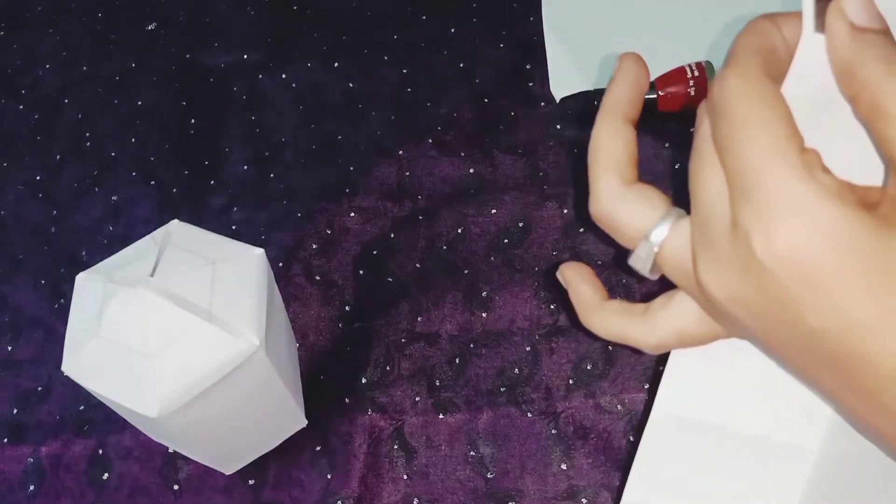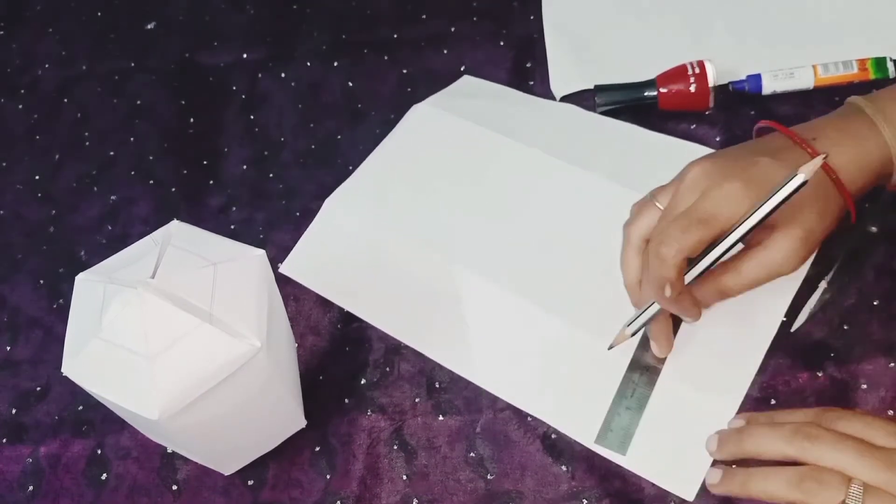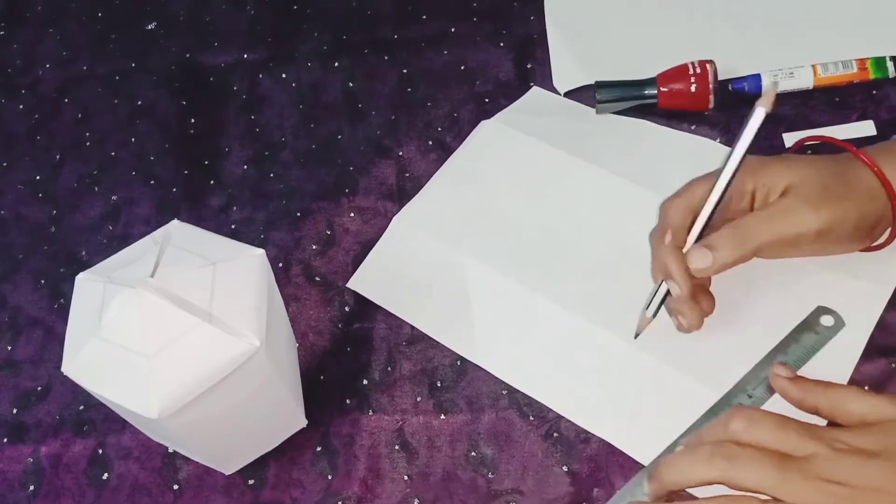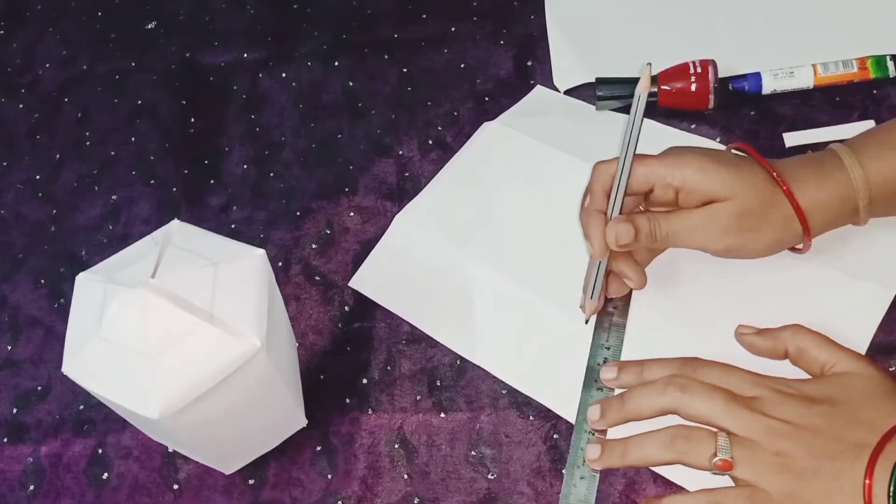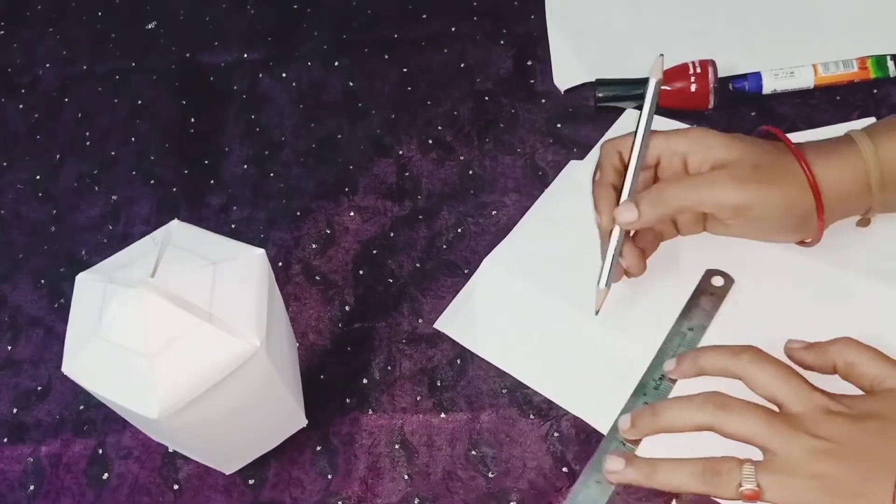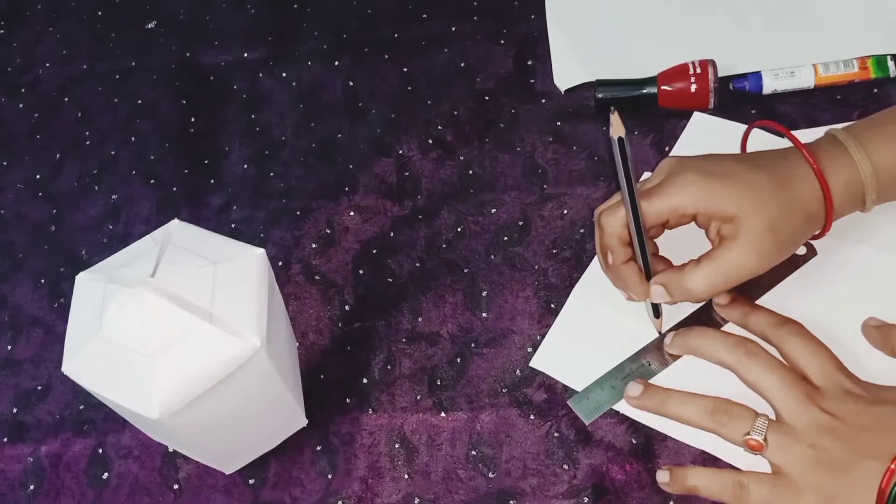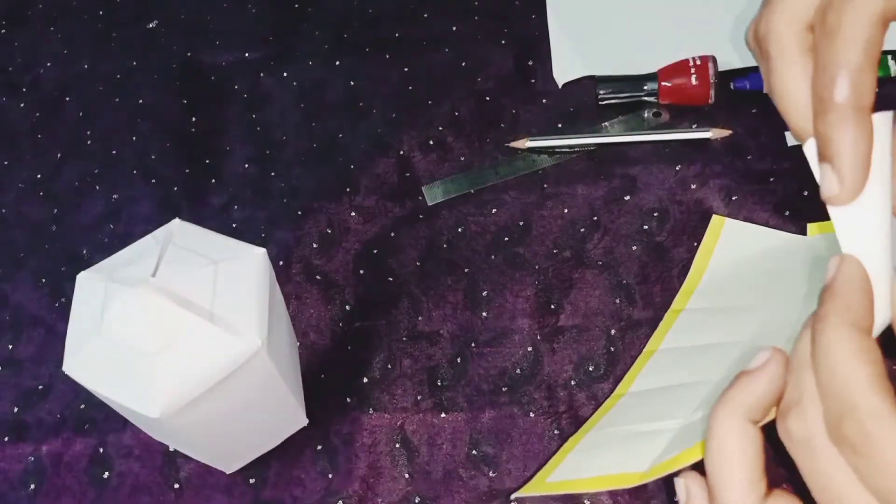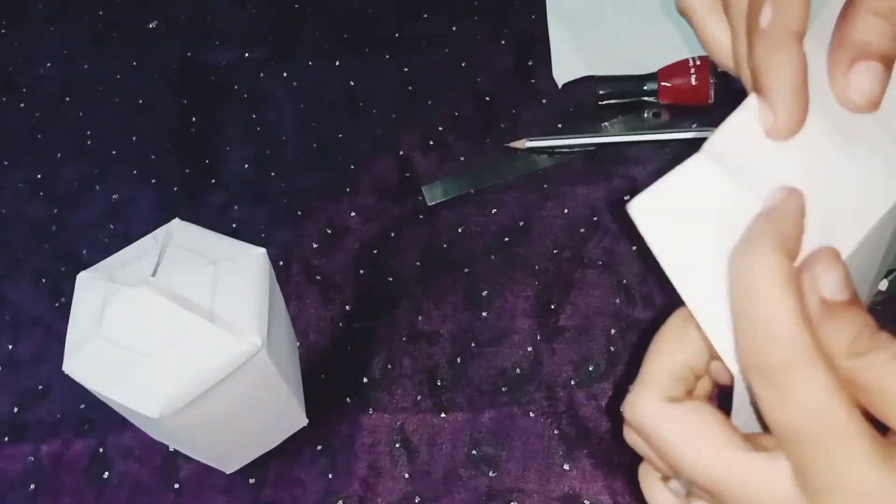After marking the center point, draw the triangle in top portion only children. Now I fold the paper and give impression for triangle.